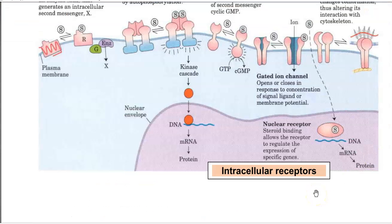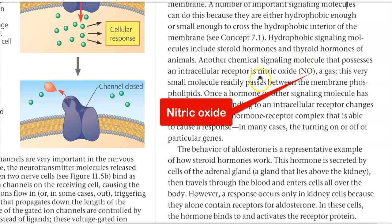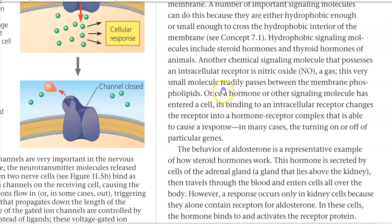Finally, we look at the intracellular receptor. The one important intracellular receptor is commonly referred to as the nuclear receptor. Intracellular receptors are mainly hydrophobic in nature, enabling them to cross the cell membrane and interact with the intracellular receptor. Examples of hydrophobic signaling molecules include steroid hormones and thyroid hormones in animals. Nitric oxide is a very small molecule that readily passes between membrane phospholipids and can trigger an intracellular response.